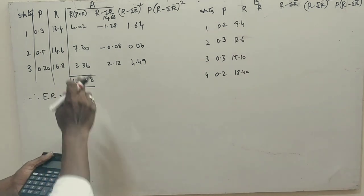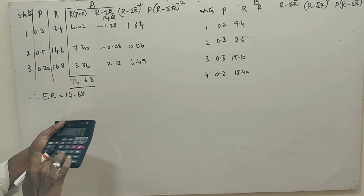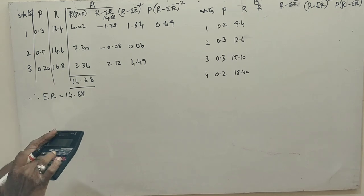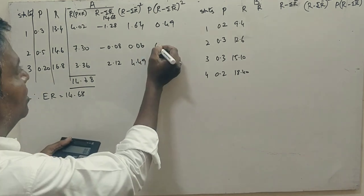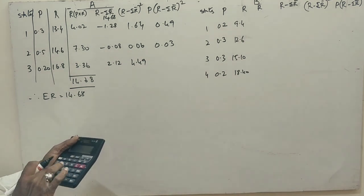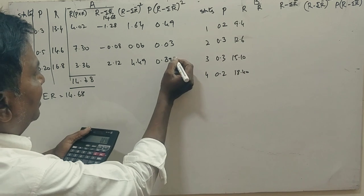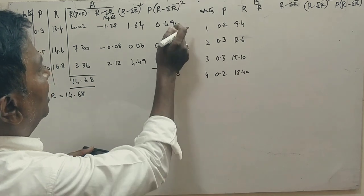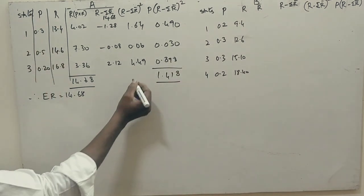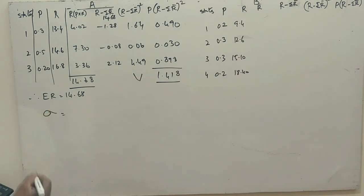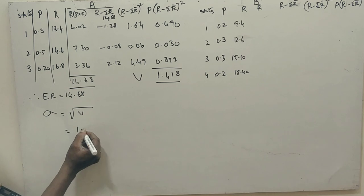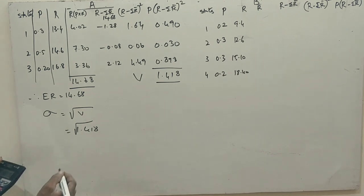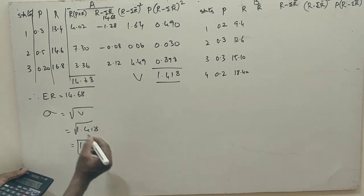Square this and multiply by probability. 1.64 into 0.3 equals 0.49, 0.06 into 0.5 equals 0.03, 4.49 into 0.2 equals 0.898. Check the totals: 1.418. This is called variance. Standard deviation equals root of v, 1.418 root, which is 1.19%.